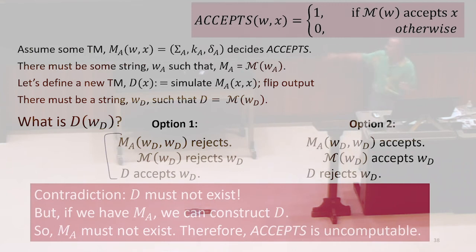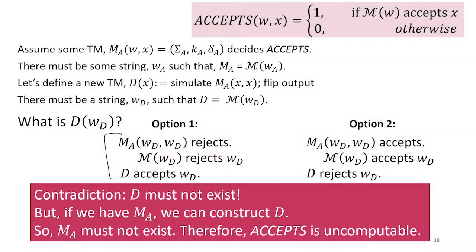So the only thing we can conclude is that D doesn't exist. There's no output it can give that makes sense. And that might not bother us if D was sort of a normal thing, because D is something we constructed that does this, and maybe we don't care that D doesn't exist.